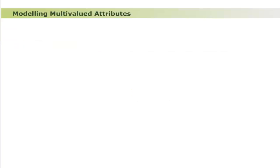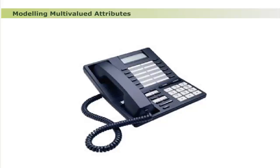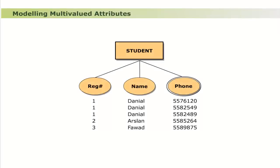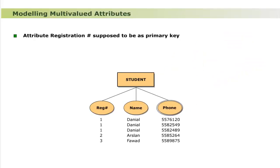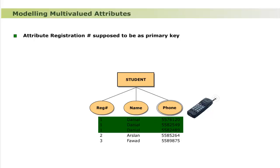Modeling multi-valued attributes: consider instances of a multi-valued attribute 'phone' before its modeling. The analysis shows these drawbacks: first, the attribute 'registration number' is supposed to be a primary key, but due to the existence of multi-valued attribute 'phone', it could not be defined. Second, there is redundancy — the name 'Danyal' is placed three times because of having three phone numbers. Adding values of phone numbers creates redundancy, which is one of the major drawbacks.